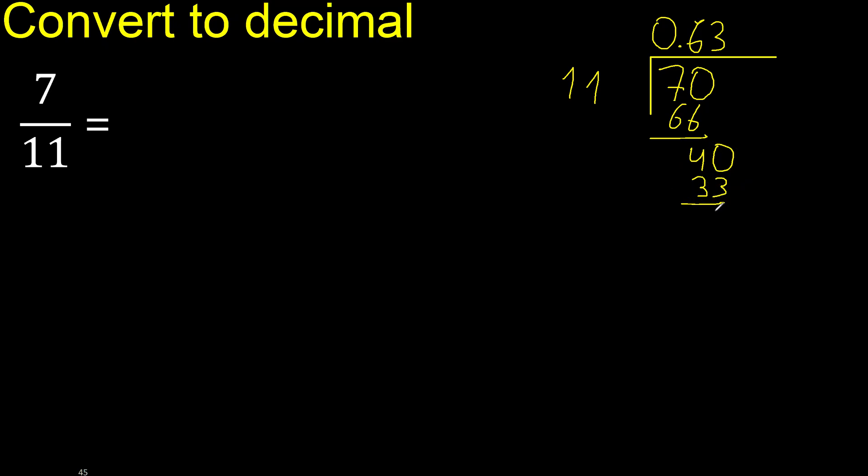Subtract 7, always complete with 0. Point is here, 70. 11 multiplied by 6, subtract, complete. 40, 11 multiplied by 3.